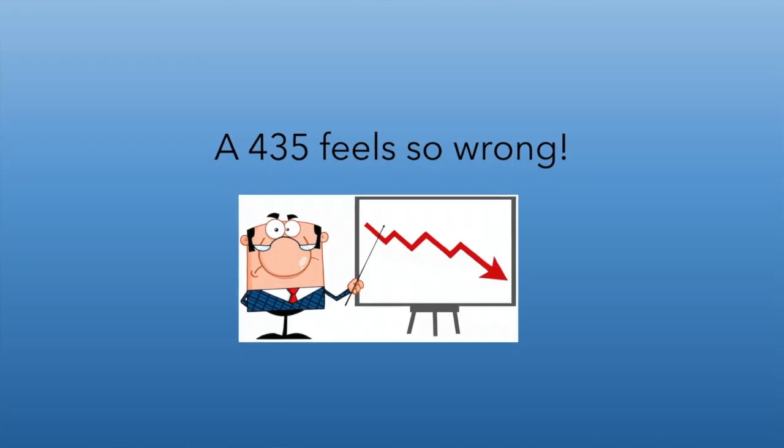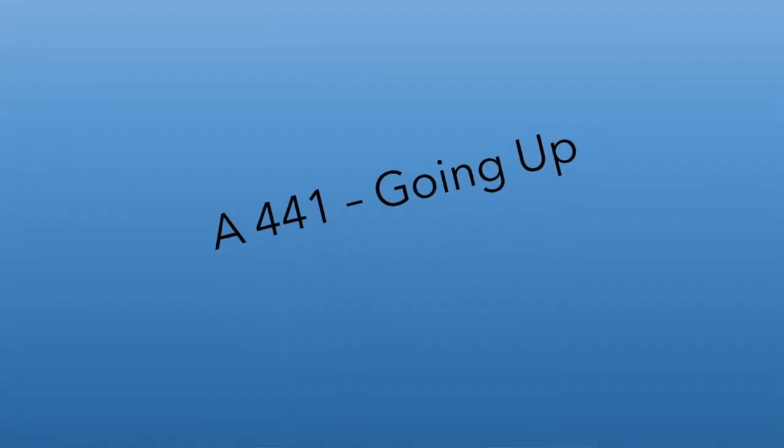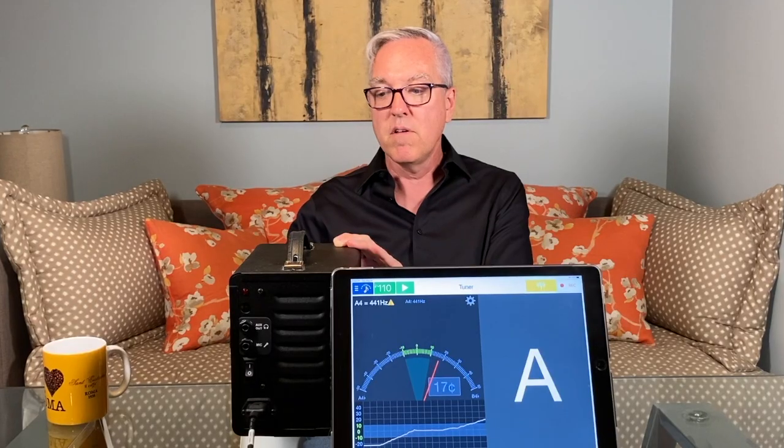But it doesn't have to be 441. It could be 440, 439, 438 — that's 436, that's A equals 435. Those are all subtle variations of what A is, just like with colors. We could say any of them, so that's why we have to decide and pick one and say A equals 441. That's what we're going with.